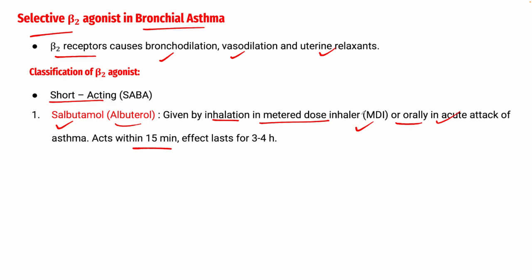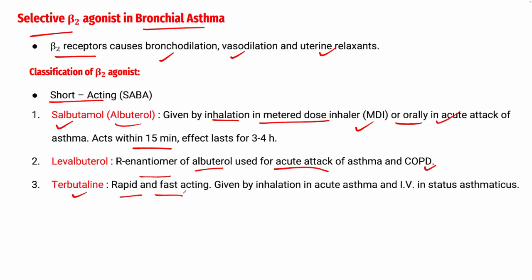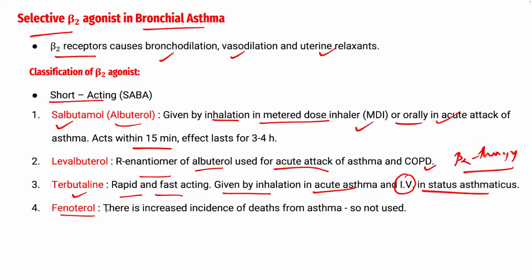Levalbuterol is the enantiomer of albuterol, with the same effects as salbutamol, used in acute asthma attacks and COPD. Terbutaline is rapid and fast-acting, given by inhalation for acute asthma and status asthmaticus — a condition of acute severe asthma where beta-2 agonist therapy becomes unresponsive. Fenoterol is now not preferred due to a high incidence of fatal outcomes.